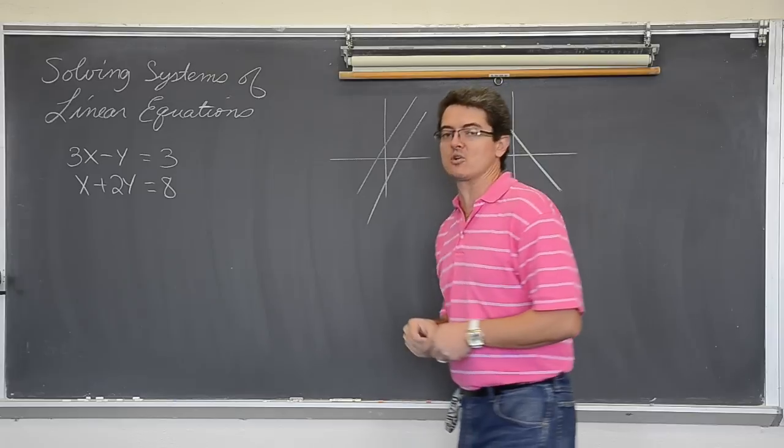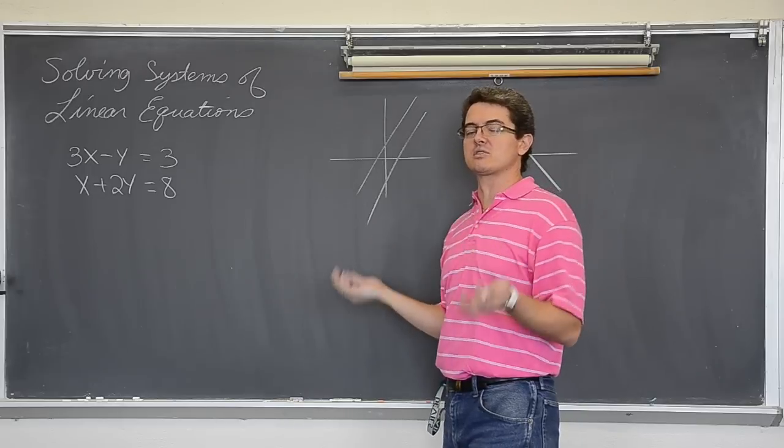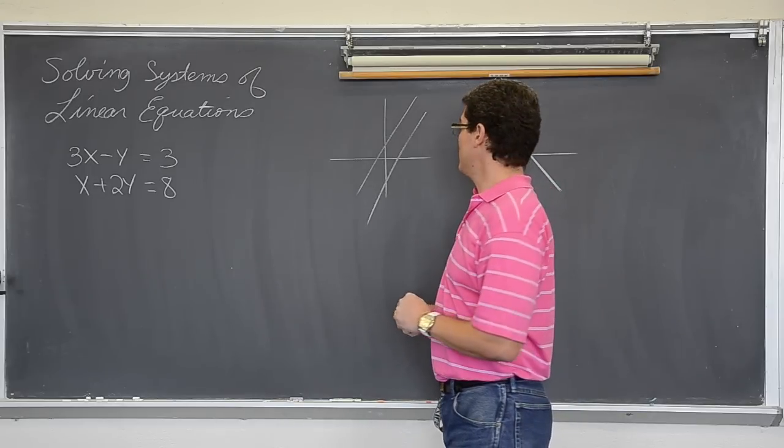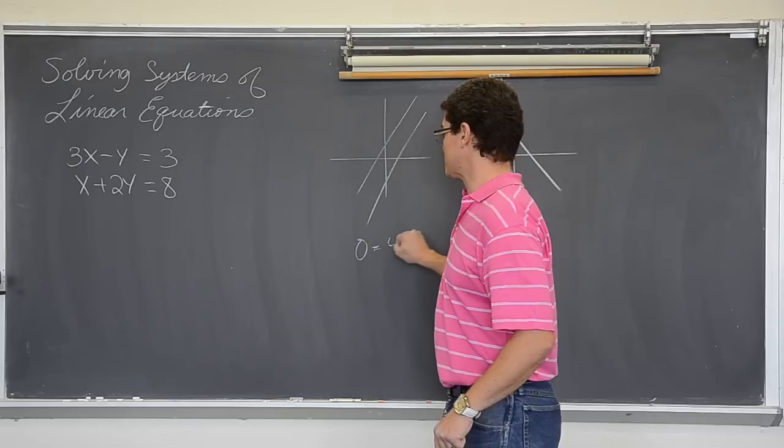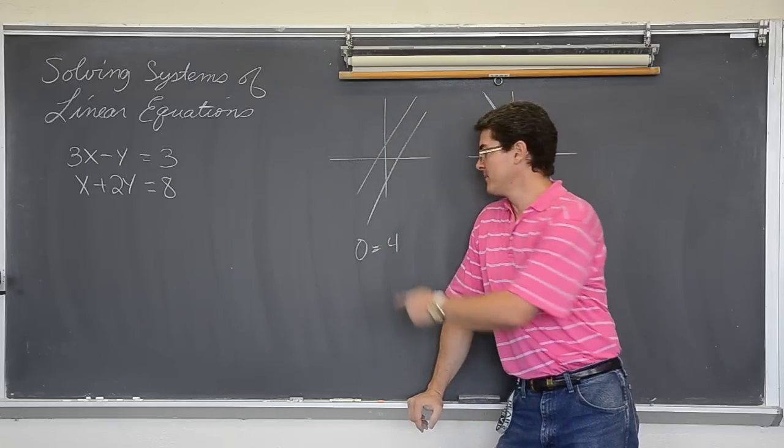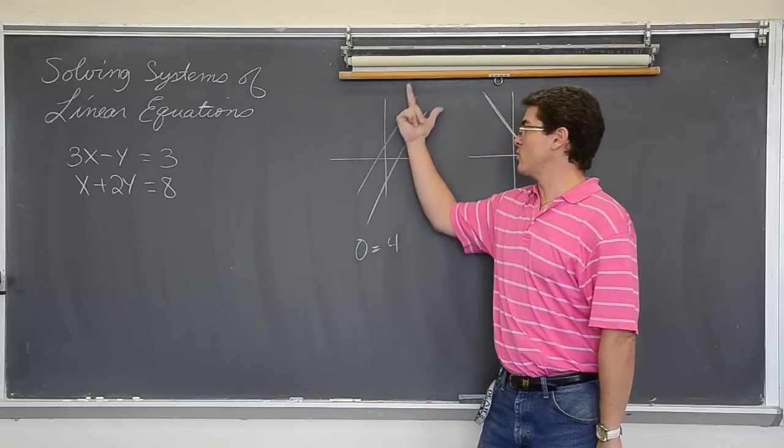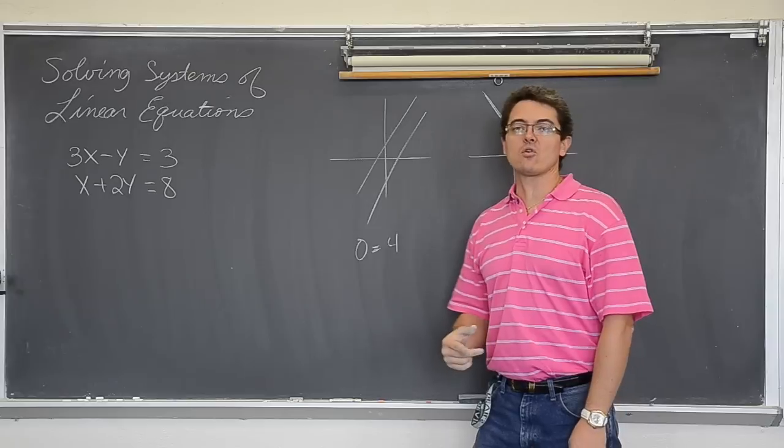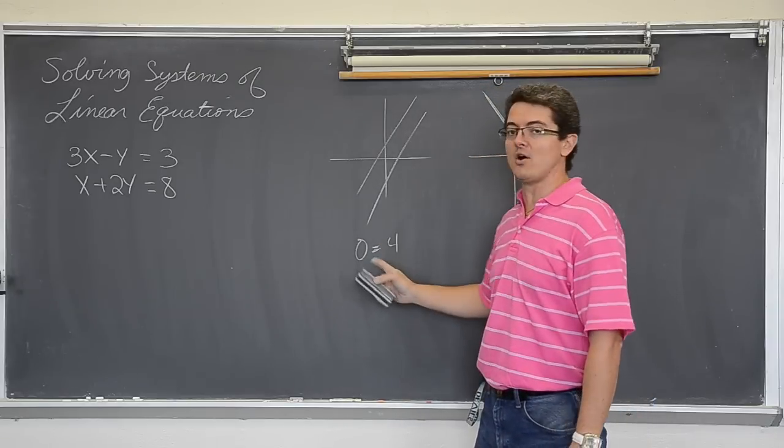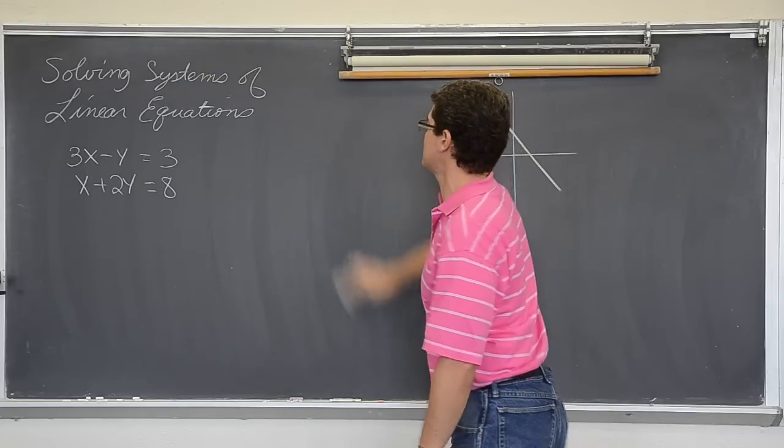These that have one solution are kind of normal and things happen like you would expect. But for where you have two lines that are parallel, you are going to be solving your problems and all of a sudden everything is just going to go away. Like all the x's and y's are going to disappear and you might have an answer like zero equals four. So it seems like you have done something wrong and what is left is a false statement. That is what happens when your lines never cross.